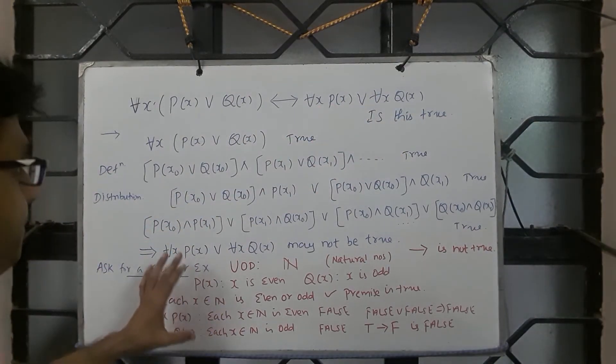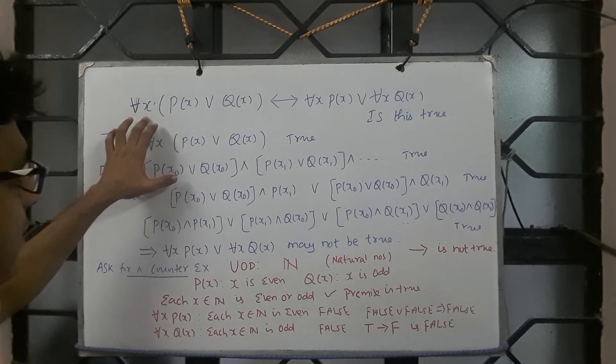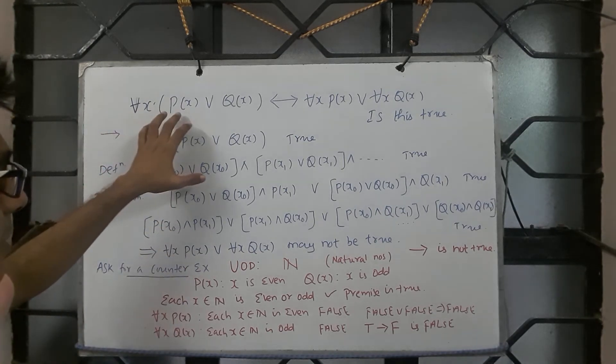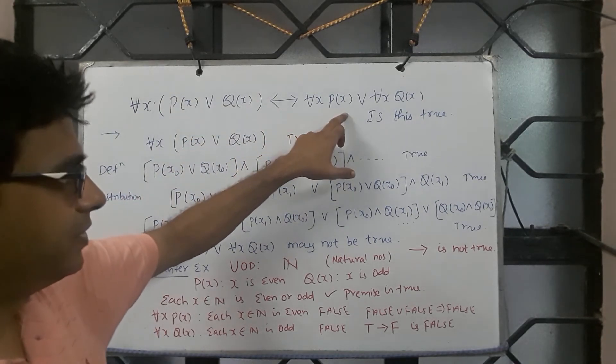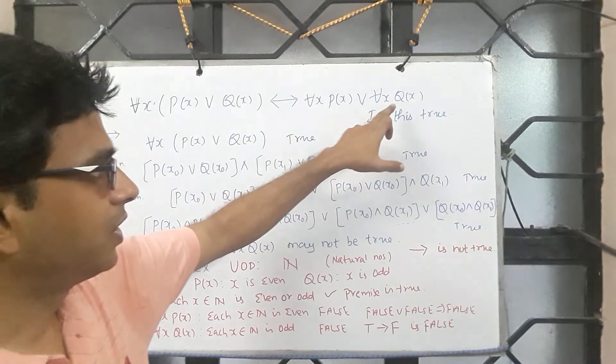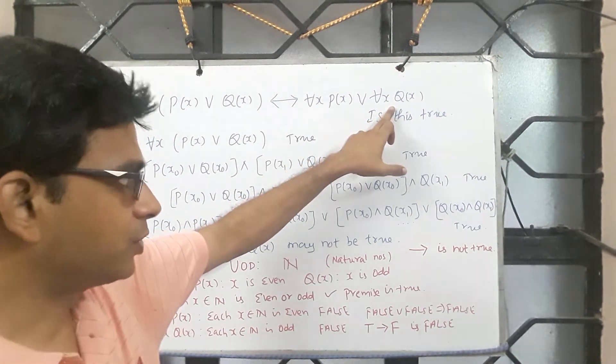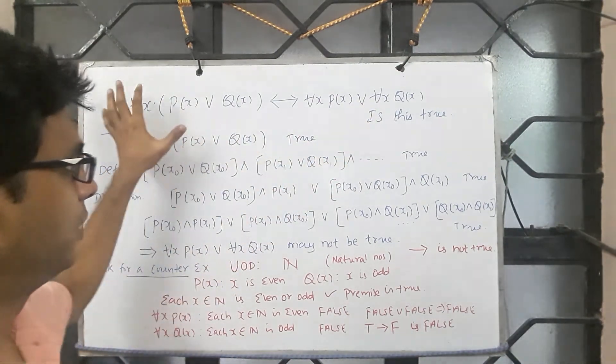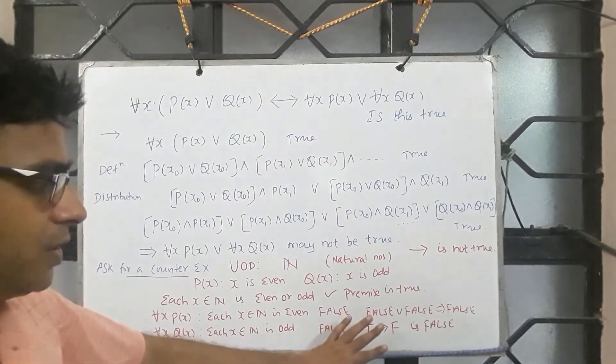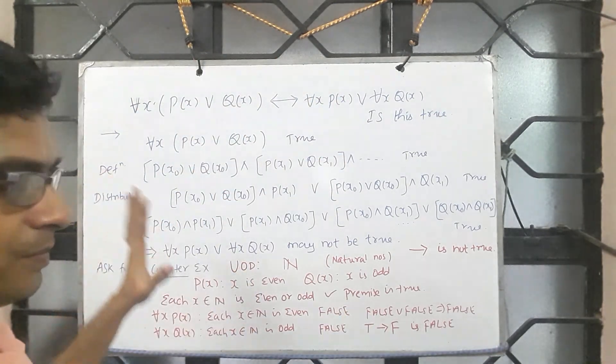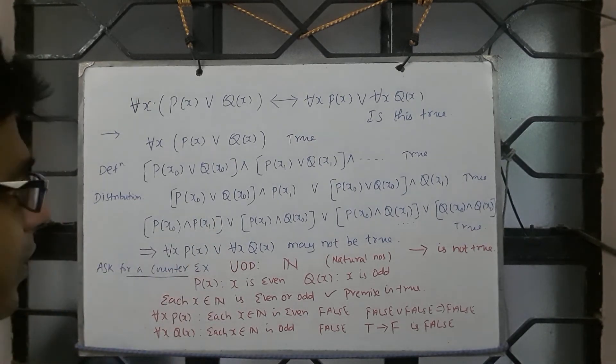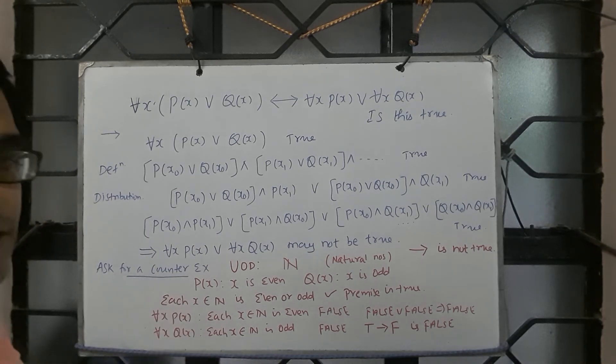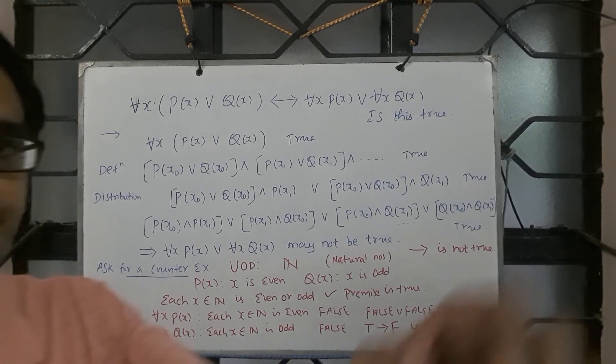Here is a counter example: each x in the natural numbers is even or odd, which is true. This says each x is even - false, and each x is odd - also false. So false or false is false. So true implies false is false. So the claim is false. The other direction may be true. This direction is false. Probably the other direction is true, which we shall see now.